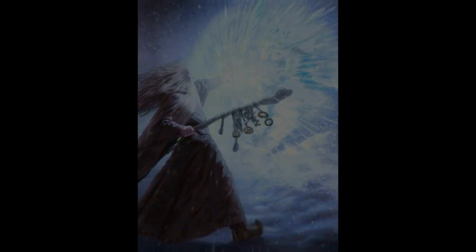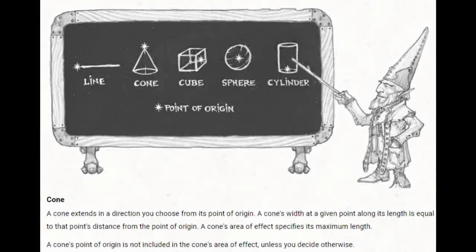First, let's look at what the Player's Handbook has to say. A cone extends in a direction you choose from its point of origin. A cone's width at a given point along its length is equal to that point's distance from the point of origin. A cone's area of effect specifies its maximum length. A cone's point of origin is not included in the cone's area of effect unless you decide otherwise. So, the basics here are that the point of origin, at least in the case of the spells I discussed, is either the caster, or in the case of spells like Dragon's Breath, the creature you imbued with the spell.